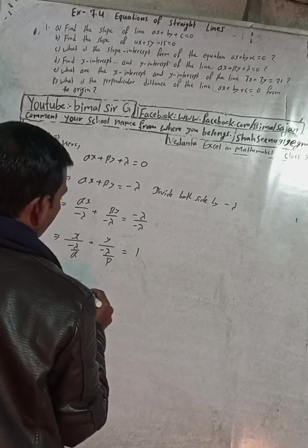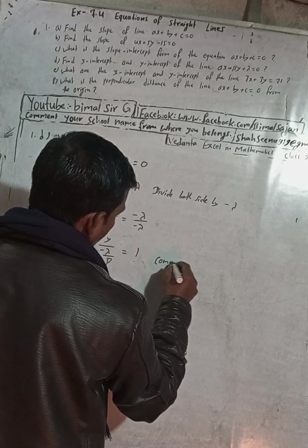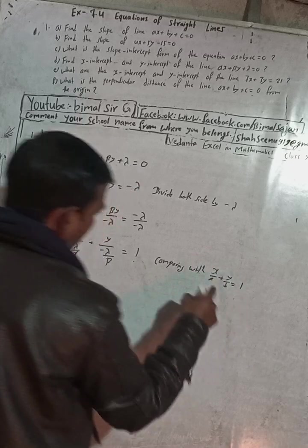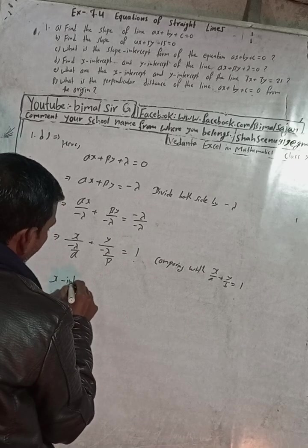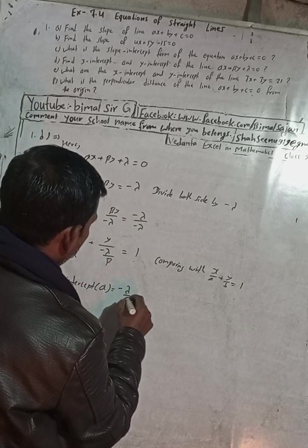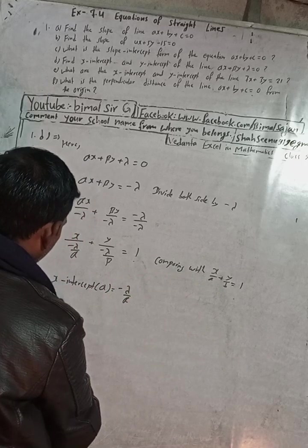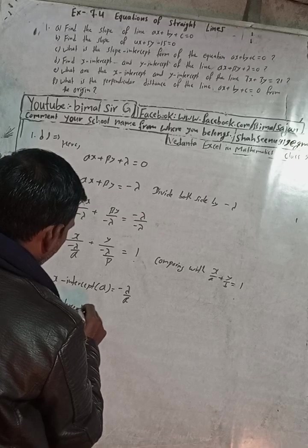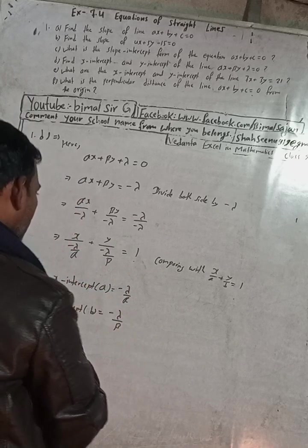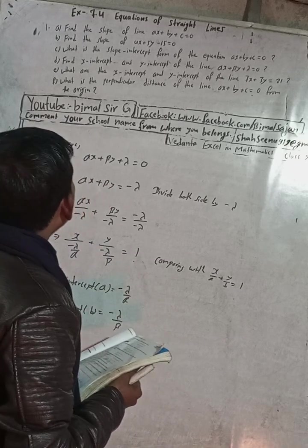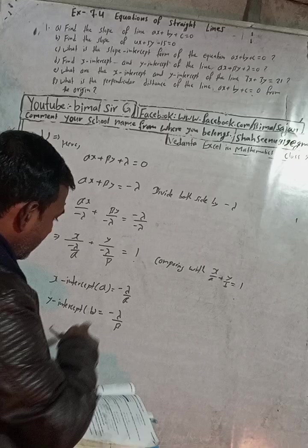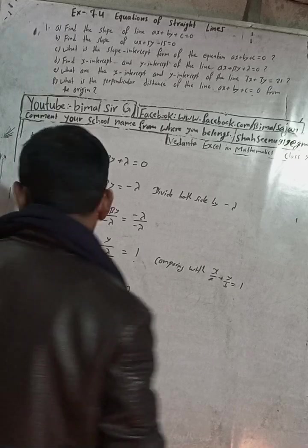Comparing with the standard double-intercept form x/a + y/b = 1: the x-intercept a = -γ/α, and the y-intercept b = -γ/β. So the x-intercept is -γ/α and the y-intercept is -γ/β.